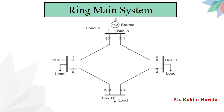Here the figure shows the single line diagram of a typical ring-main system. In this system, various power stations or substations are interconnected by alternate routes, thus forming a closed ring. In case of damage to any section of the ring, that section may be disconnected for repairs and power will be supplied from both ends of the ring, thereby maintaining the continuity of supply.